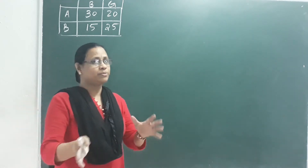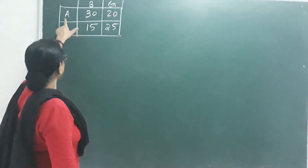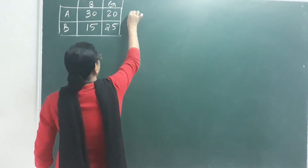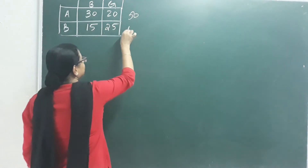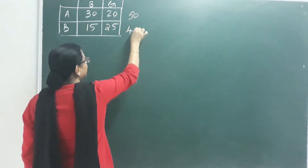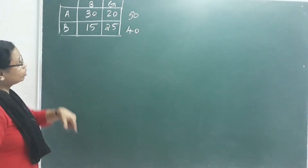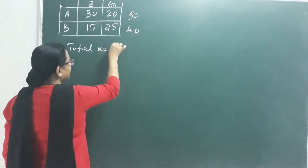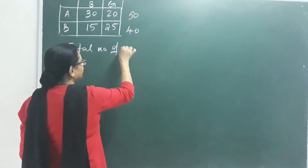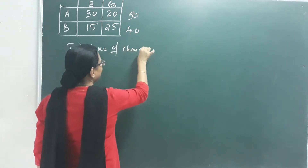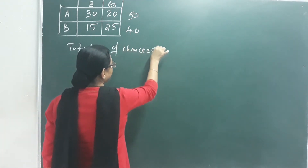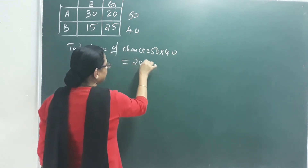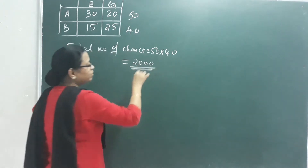How many students are in this class? In class 10A there are 50 students, and in class 10B there are 40 students. The total number of selections is equal to 50 into 40, which is equal to 2000 chances.